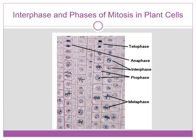If we look at plant cells, we can see cells in different phases. Here's interphase, when the cell is not dividing. Then if we look at the stages of mitosis: here's prophase, metaphase, anaphase, and telophase.